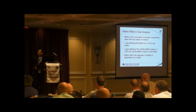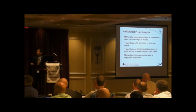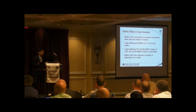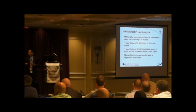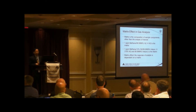Let's talk about the matrix effect. What is the matrix? The matrix is the composition of the sample components other than the analyte of interest. So in this example, one ppm of methane is in 99.9999% nitrogen. If we are only interested in analyzing methane, the 99.9999% nitrogen is the matrix. The next example is one ppm of methane, 10% nitrogen, and 89.9999% helium. Again, if we are only interested in analyzing methane, then the 10% nitrogen and 89.9999% helium is the matrix.